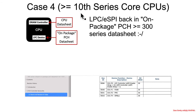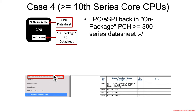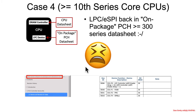Finally, case 4: if you're on 10th series core CPUs or later with a very new machine, it goes back to the PCH data sheet — the on-package PCH data sheet. There are both PCH data sheets and on-package PCH data sheets, which relates to the fact that it's on the same package. So look it up in the table on the website. If it says you're on 10th series or newer, you'd go to the 300 series chipset on-package PCH data sheet volume one. Why Intel keeps moving it around everywhere — it makes it very difficult to deal with.